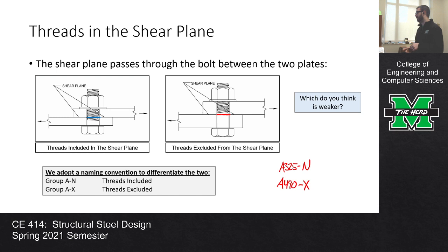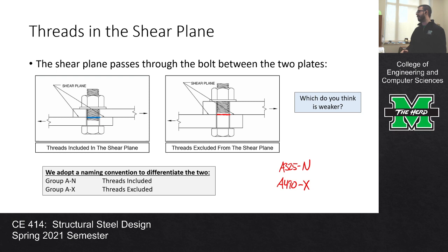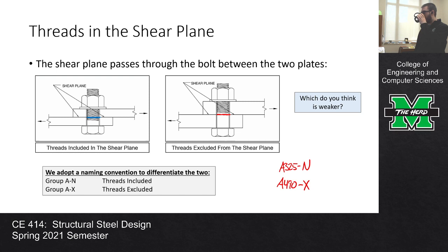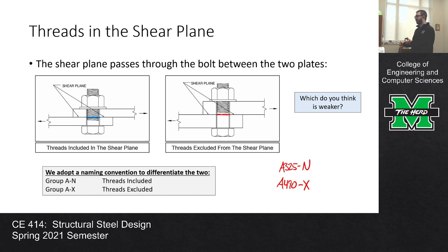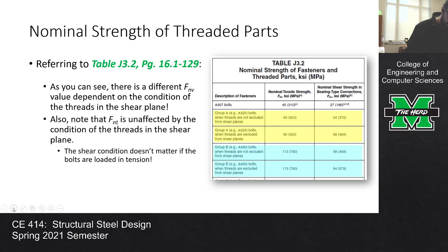The naming convention uses N for threads not excluded (included) and X for threads excluded — so A325N or A490X. If you're in design and don't know the condition, always assume the worst case: threads included. Only assume threads excluded if you know that's the case.